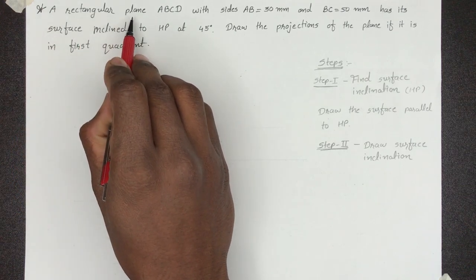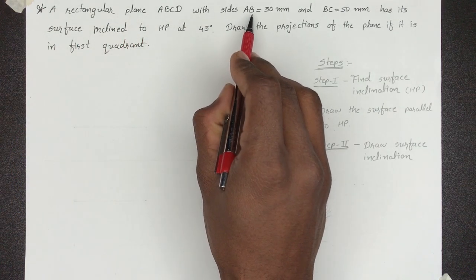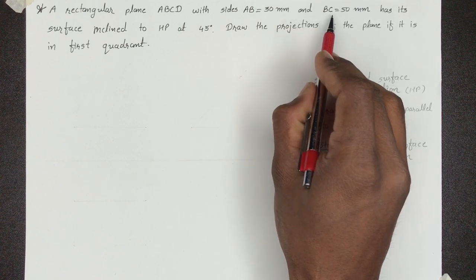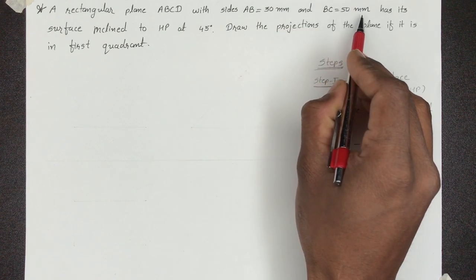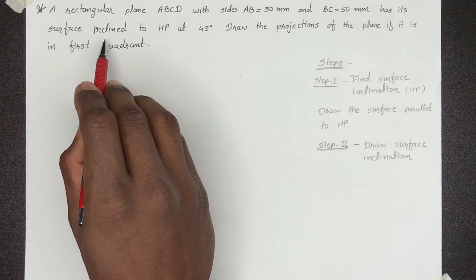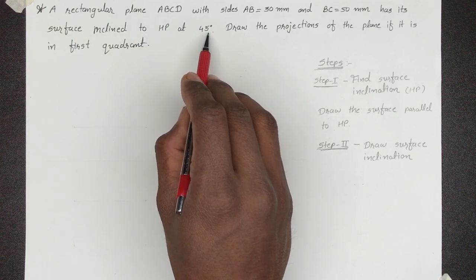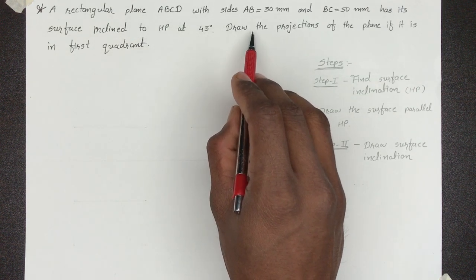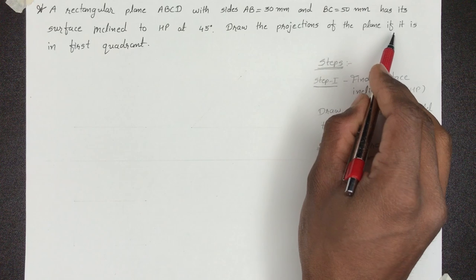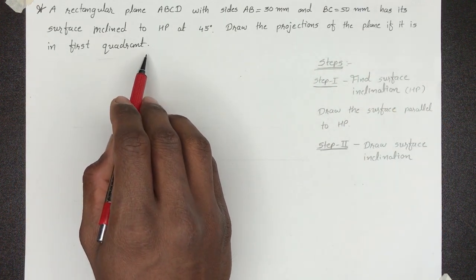A rectangular plane ABCD with sides AB = 30 mm and BC = 50 mm has its surface inclined to HP at 45 degrees. Draw the projections of the plane if it is in the first quadrant.